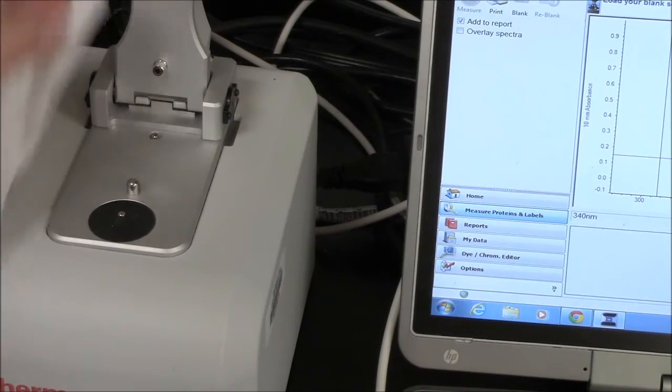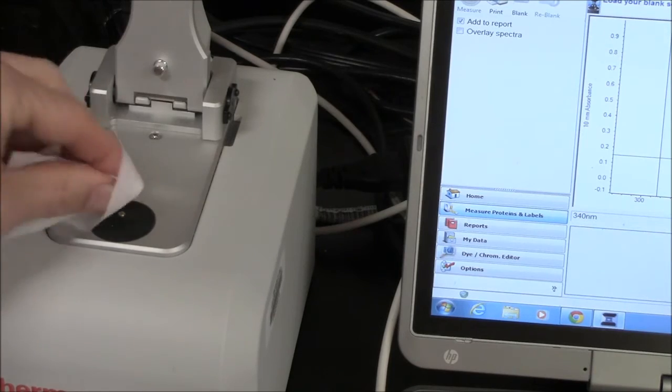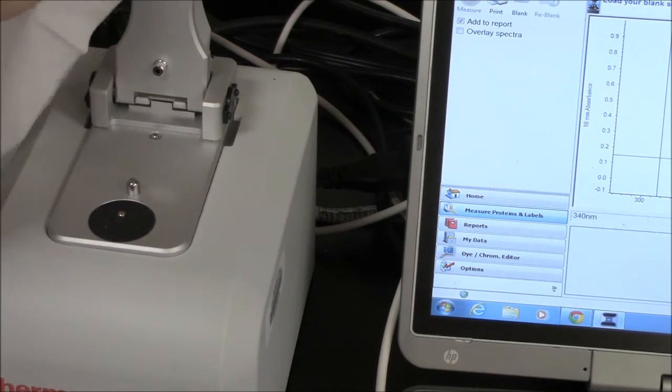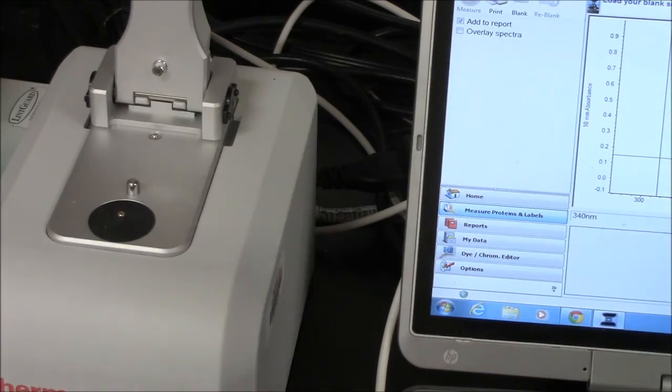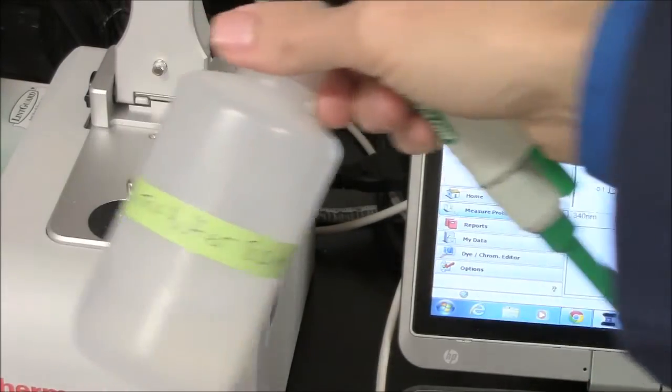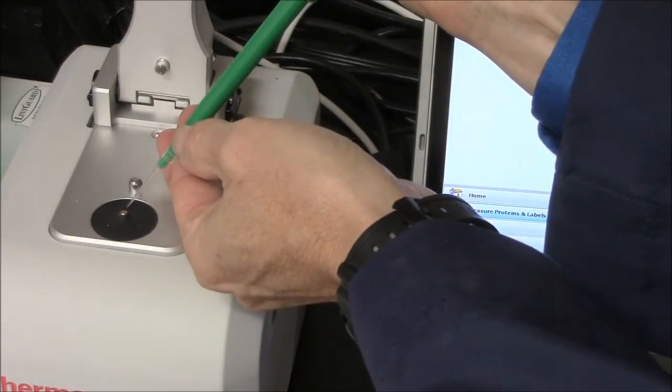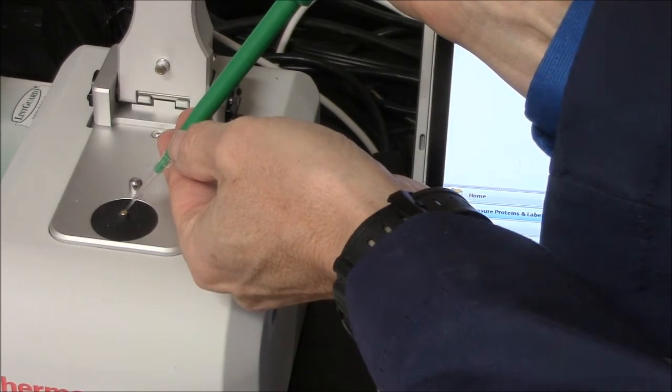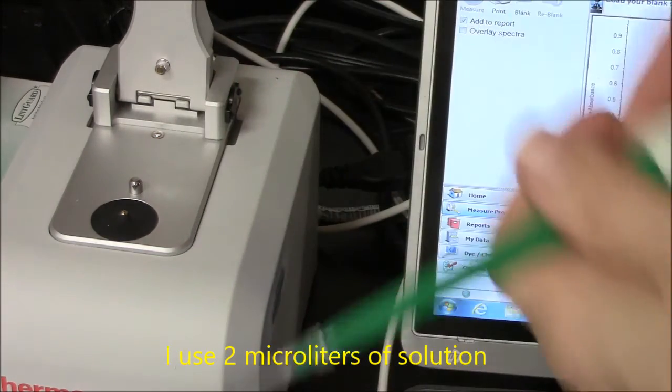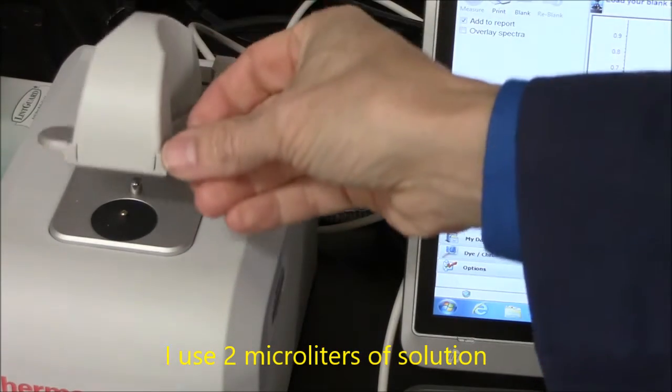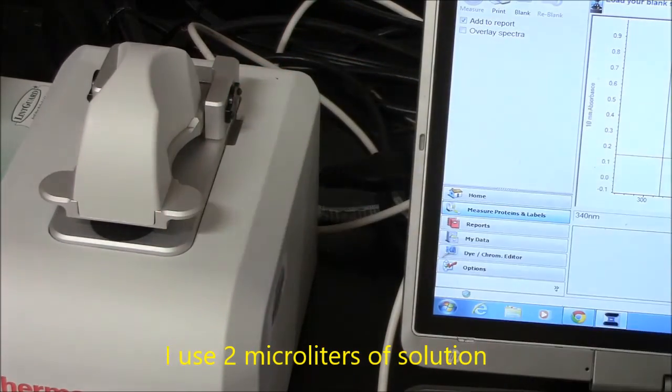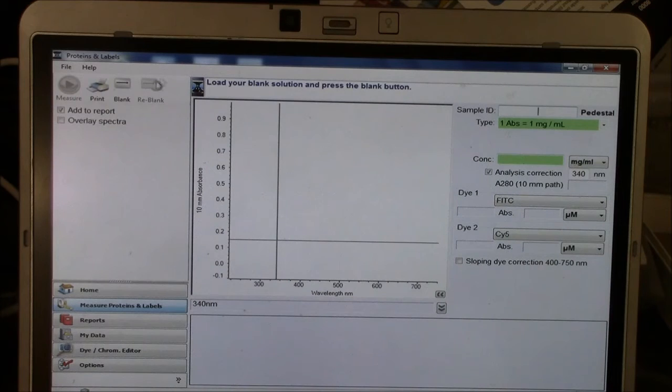I prepare the spectrophotometer by wiping off any residual solution. For the blank I'm using this buffer. I'm putting two microliters onto the pedestal. This will be my blank.